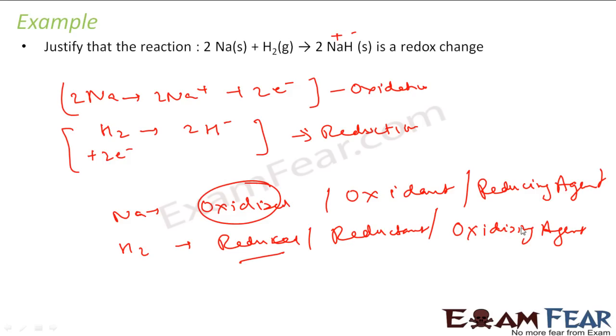Reducing agent is the one who get oxidized and help other get reduced. Agent is... For example, if I say he is a marketing agent, sales agent. Sales agent is one who sells the thing, right? He won't buy. Sales agent is not the buyer. He is the one who is selling.